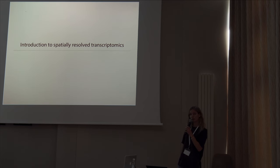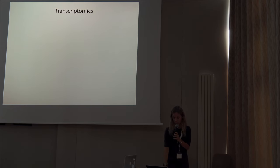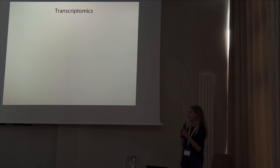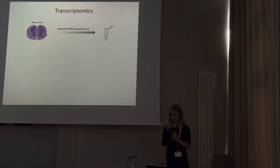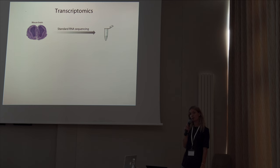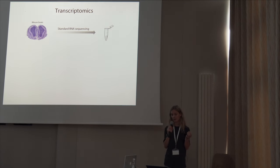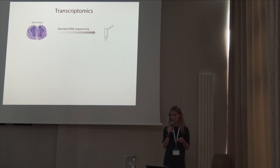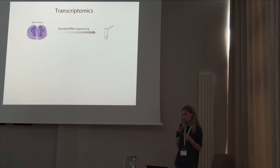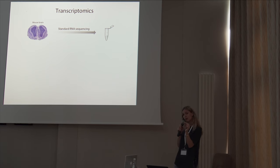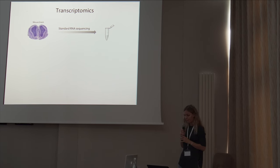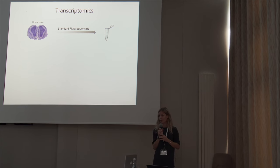Some introduction to spatially resolved transcriptomics. When you study gene expression or transcriptomics, many use something we refer to as standard RNA sequencing. You take a piece of biopsy, homogenize it, extract all the RNA molecules from that particular biopsy, and analyze them jointly. This means you get an average representation of all genes expressed within that tissue, and you lose the spatial information of where particular genes are expressed. Some genes that are lowly expressed also risk being diluted as noise.